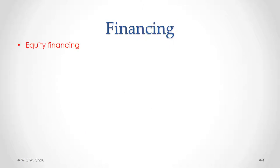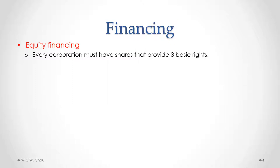With equity financing, which involves the corporation obtaining capital by issuing shares, every corporation must issue shares that provide at least three basic rights. All three basic rights don't have to be in one type of share — they can be found across different types of shares issued by the corporation — but the simplest way is to issue one class of common shares that has all three basic rights. The first right is the right to vote for the election of directors, and we'll talk a little later about what directors do.